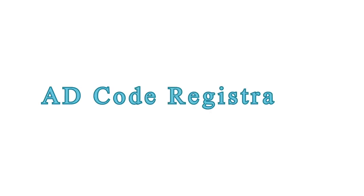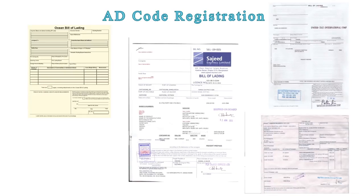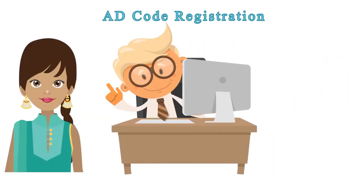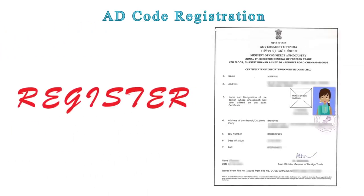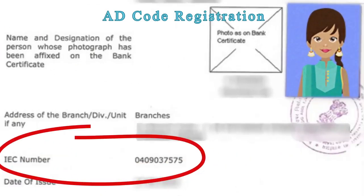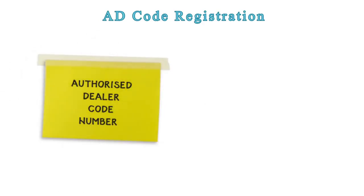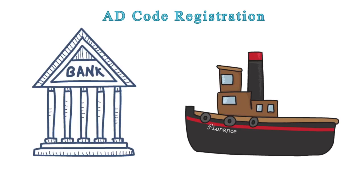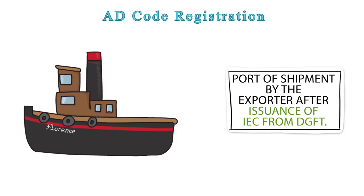A.D. Code Registration. Before filing any export shipping bill, Nikku or the CHAs are required to register with the customs their I.E. code and authorized dealer code number of the bank through which export proceeds are to be realized. A.D. Code Registration is done at the port of shipment by the exporter after issuance of I.E.C. from D.G.F.T.